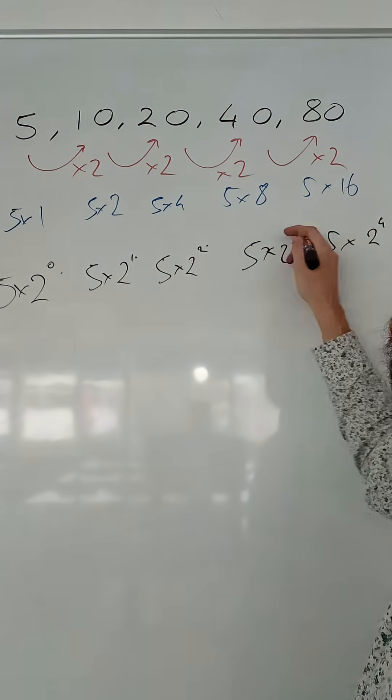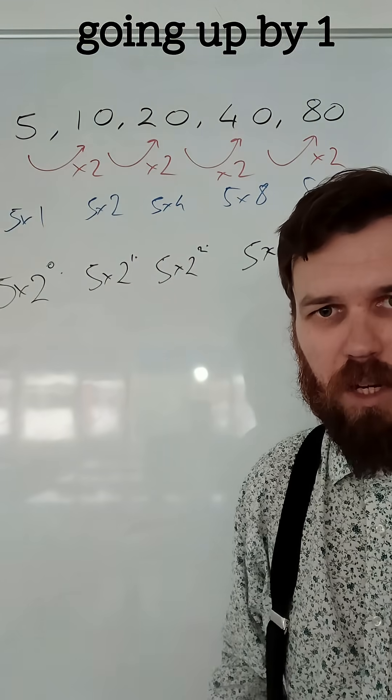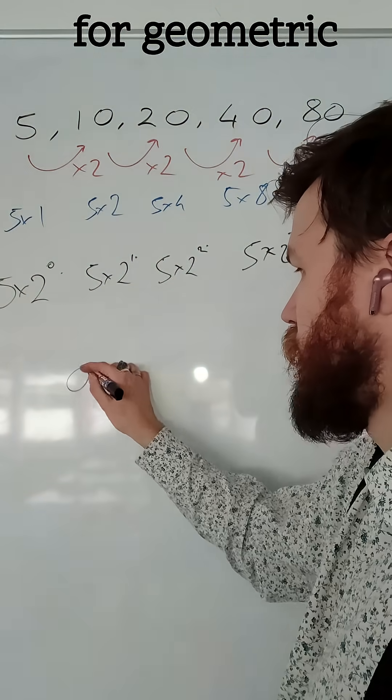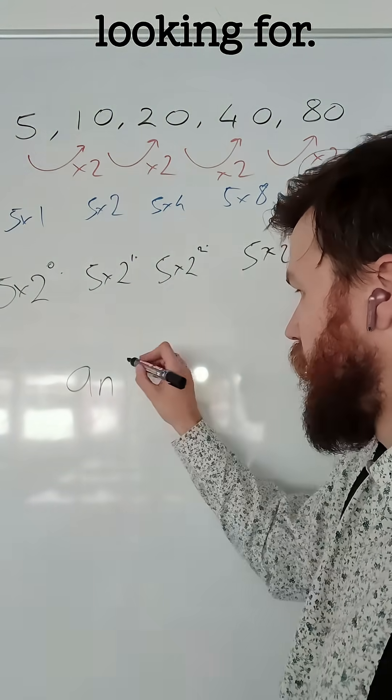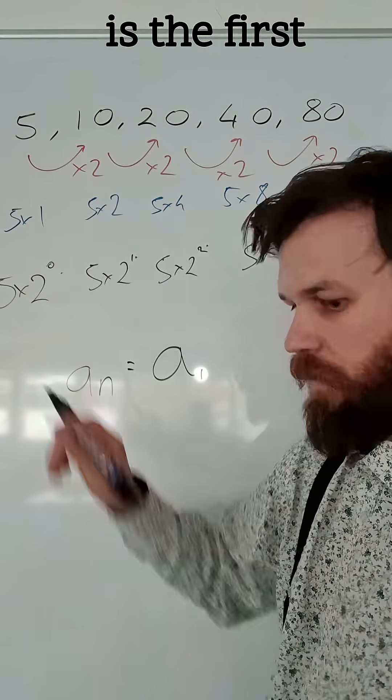Hang on. Those are going up by 1 each time. The general rule for a geometric is whatever term you're looking for, your nth term, is the first term, the 5,